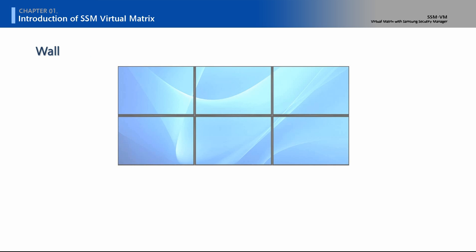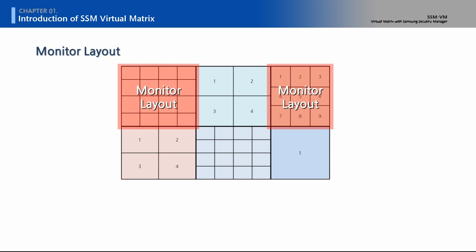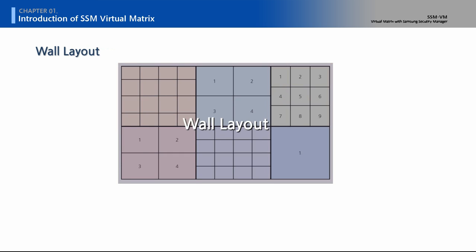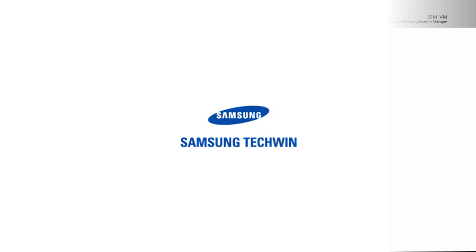It is better to understand each term for SSM VM. A wall is the physical term for what is configured with multi-monitors. Monitor layout is capable of placing camera images and is displayable in a split pattern in each monitor. Wall layout is configured in one or more monitor layouts and displayed on the entire wall. For more information, see the user manual of SSM Virtual Matrix.